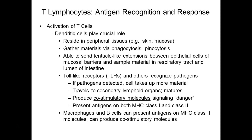Dendritic cells also have toll-like receptors — general receptors on cells that help identify pathogens. If a pathogen is detected, the dendritic cell will really gobble up more material, engulfing as many samples as it can. Then it travels to secondary lymphoid organs — where B cells and T cells are — specifically to activate T cells. It can present both MHC class 1 and class 2. Macrophages and B cells can also present on MHC class 2 molecules to communicate with helper T cells.